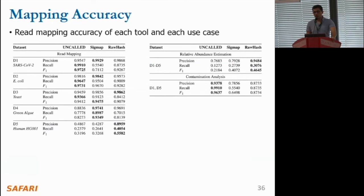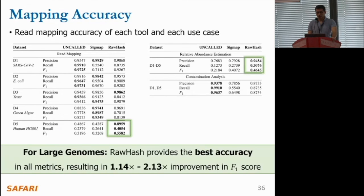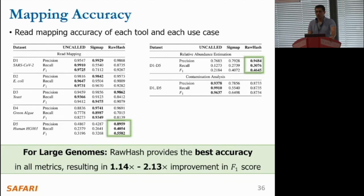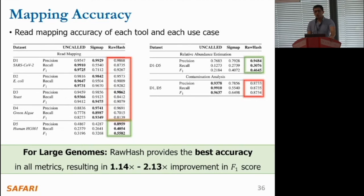We also evaluate the read mapping accuracy for each dataset separately and for the datasets combined for relative amounts estimation and contamination analysis. We find that RawHash produces the best accuracy in all metrics for large genomes, up to 2.13 times better for the F1 score compared to UNCALLED and Sigmap. This is essentially because we can fine-tune the sensitivity-related parameters in RawHash while still matching the throughput of the nanopore sequencer, which is not the case for Sigmap, whose default parameters fall behind the nanopore sequencer.